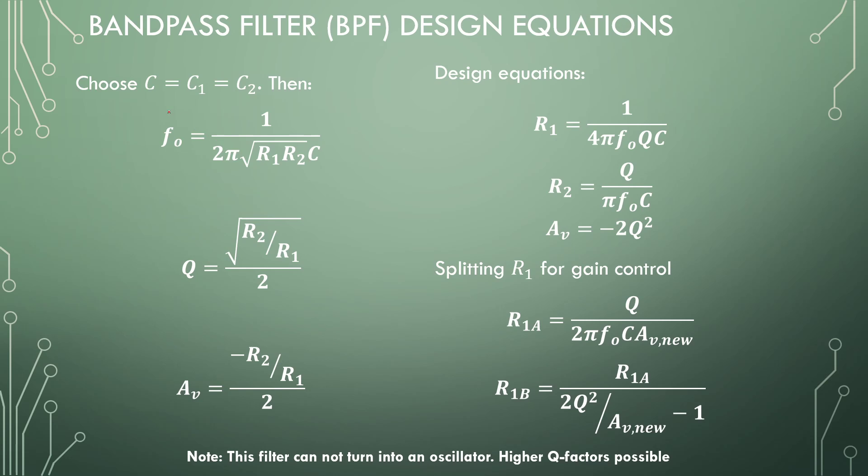Typically you will design for a specific center frequency and Q factor. Making design equations, we get resistor 1: R₁ = 1/(4πf₀QC), and resistor 2: R₂ = Q/(πf₀C). The gain, however, is negative twice the Q factor squared. At a Q factor of 100, you're already at a gain of 20,000. Your amplifier must supply a large amount of gain if you want to reach a high Q factor.